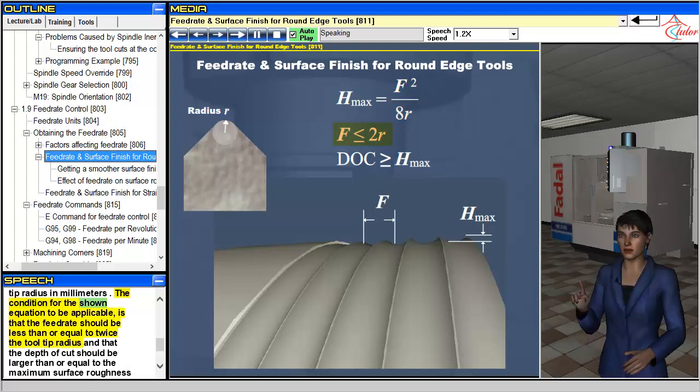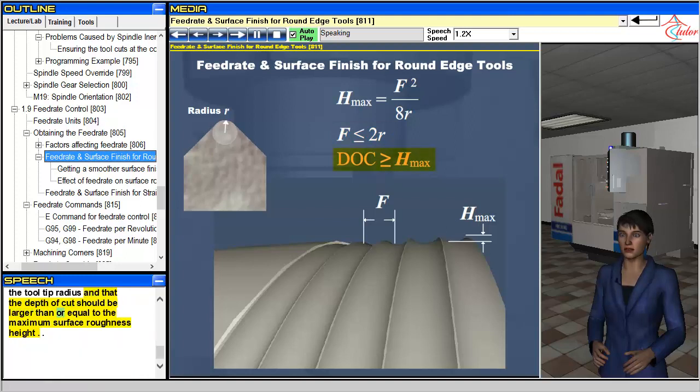The condition for the shown equation to be applicable is that the feed rate should be less than or equal to twice the tool tip radius, and that the depth of cut should be larger than or equal to the maximum surface roughness height.